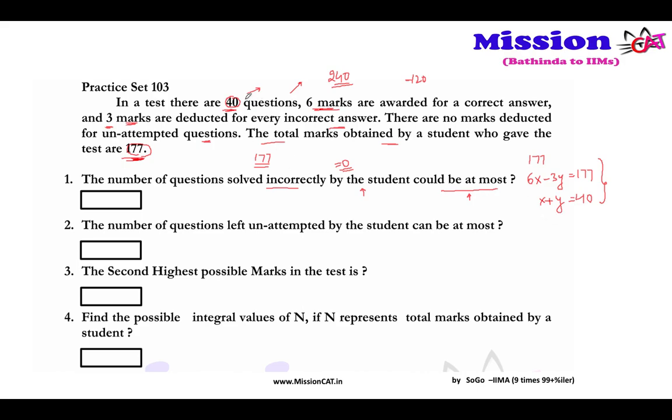Let me try to solve it another way. Let us assume that all questions are right, so your answer is 240. So if a person is attempting one question wrong instead of one question right, he will lose 9 marks. So I have 177 marks, so I have lost 63 marks, so it means 63 divided by 9, so I need to have 7 questions wrong. I can have 7 questions wrong. So the number of questions that can be incorrect maximum is your 7. Everyone got it, okay, very good.